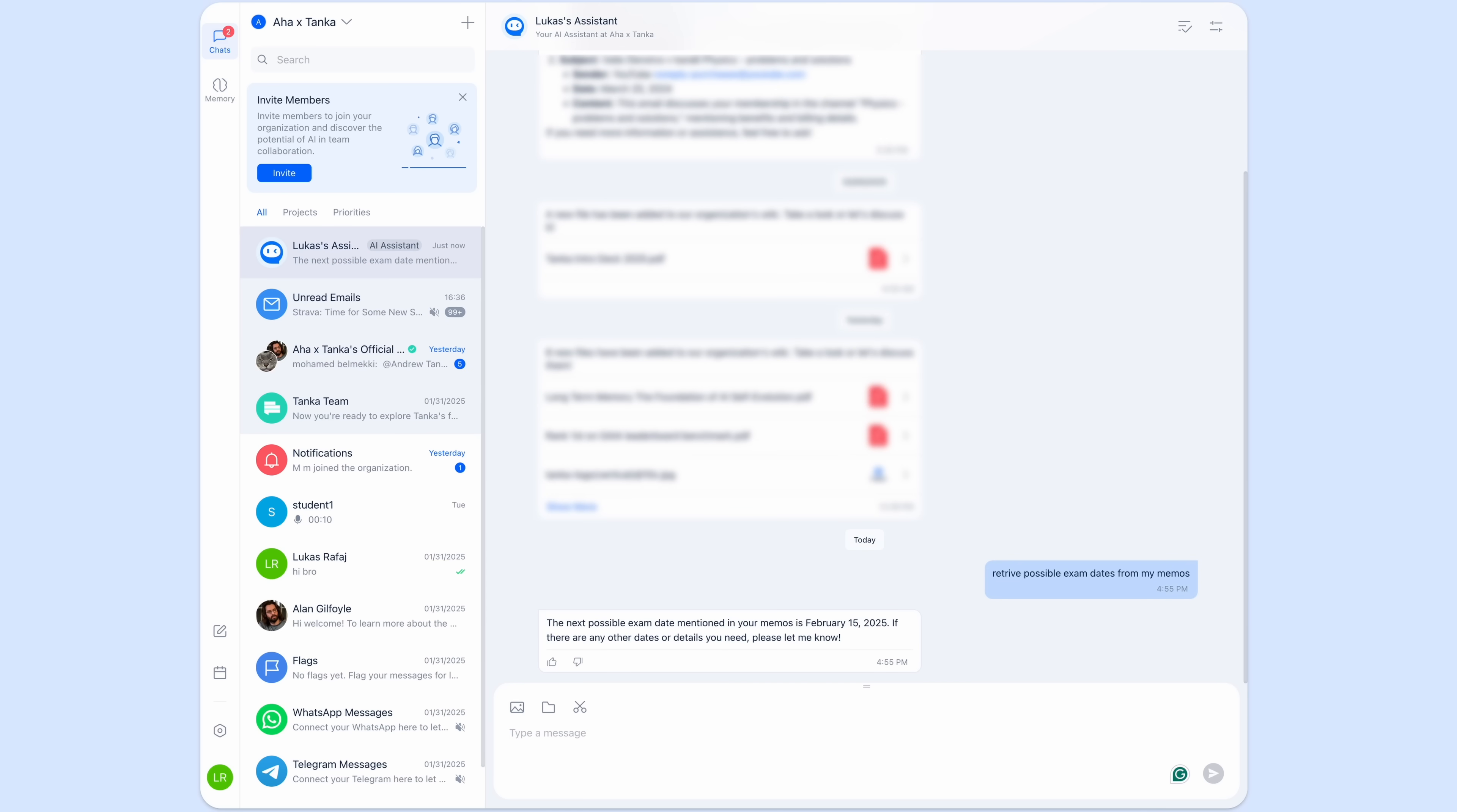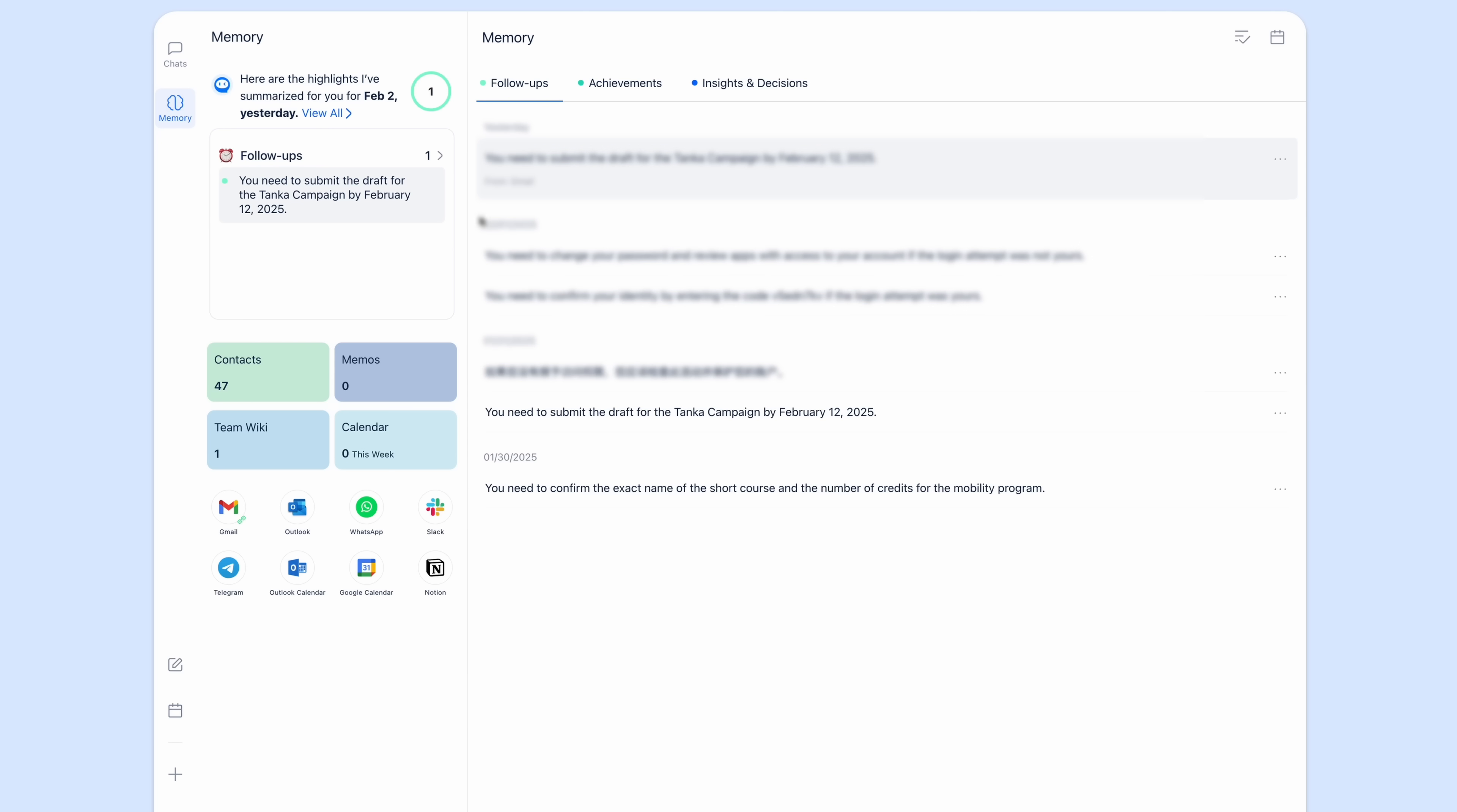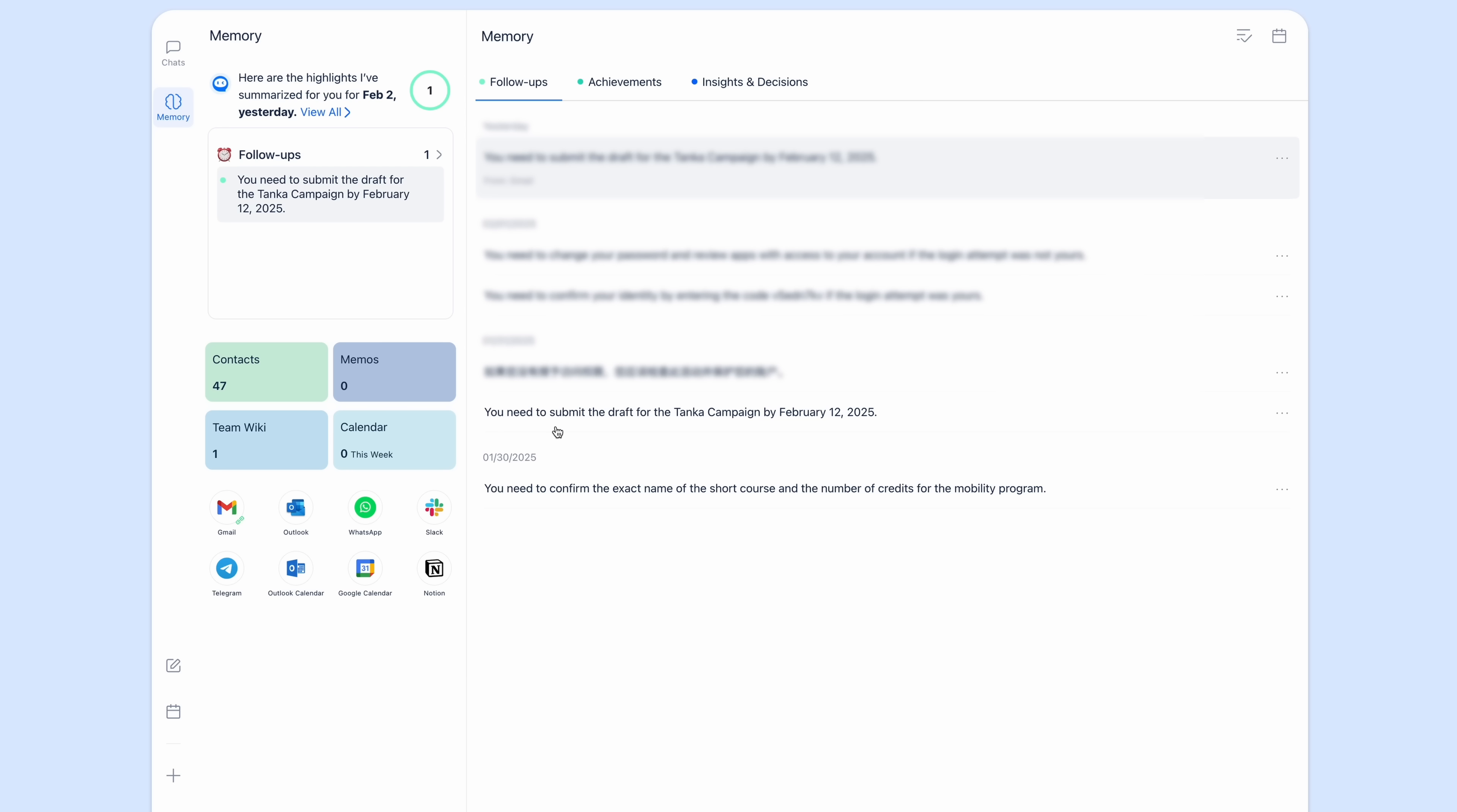You can also find it here in memos. But if you go to the chat, then you have this assistant here. And you can ask the AI to retrieve any information you have stored. For example, the date of your exam. But what kinda surprised me is this feature, follow-ups, where AI basically summarizes your duties based on your conversations. Like here, I apparently need to submit the graphed for the Tanka campaign by February 12th, 2025. And I also need to confirm something in the mobility program, which I've already done. Therefore, it is in the achievements.